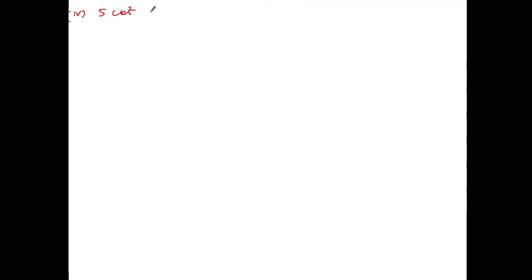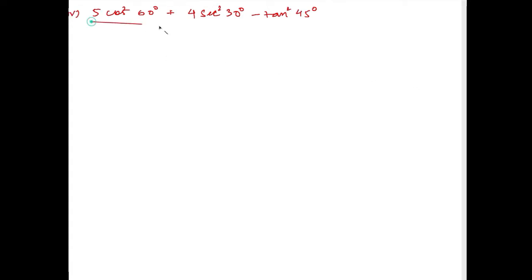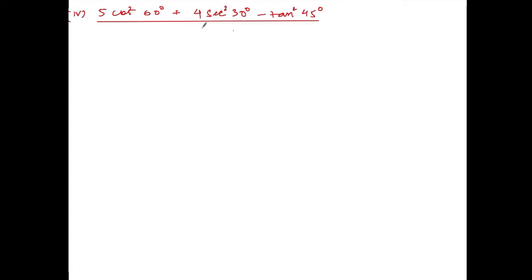We are doing Exercise 10.1, Question number 1, Roman number IV. The question is: 4cos²60° plus 4sec²30° minus tan²45°, divided by sin²30° plus cos²30°.